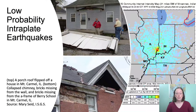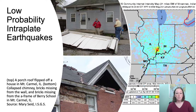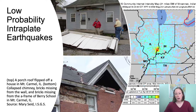Low probability intraplate earthquakes are really important to consider when looking at seismic hazard assessment for states in the Midwest. These images show damage from a magnitude 5.2 earthquake that occurred in Mount Carmel, Illinois in 2008, and the figure on the right shows the 'Did You Feel It' reports for that event. It was felt across 16 states in the Midwest and was a gentle reminder of the potential impact a larger event occurring closer to a populated area could have.